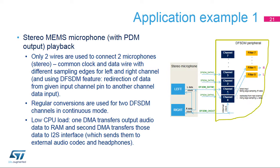The STM32H7 evaluation board can be used to run simple application examples to help you explore the digital filter for Sigma Delta modulator interface. This example is a demonstration of the MEMS microphone directly connected to the DF-SDM peripheral. Data from the microphone are processed by the DF-SDM with correct filter settings and then collected into a memory buffer using regular continuous conversions and the DMA. The recorded data are then immediately sent by the DMA controller from this buffer to the I2S peripheral and played by headphones.